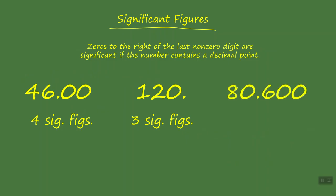Take a look at our third example. We have the number 80.600. There's a decimal point in it. Our last non-zero digit is the number six, so the zeros are significant. This particular example has five significant figures in it.